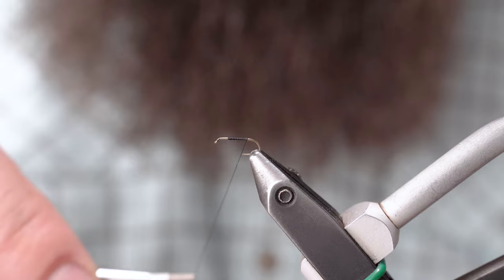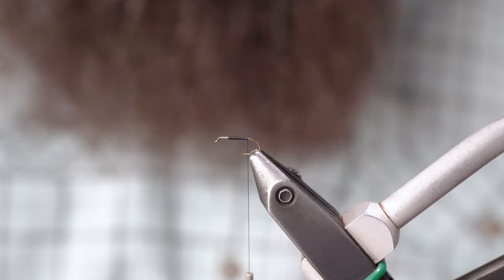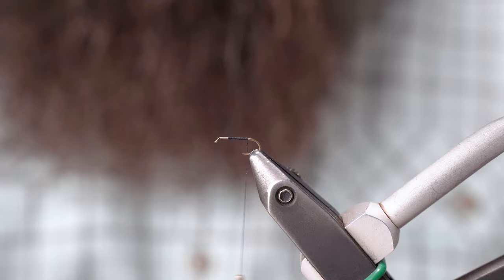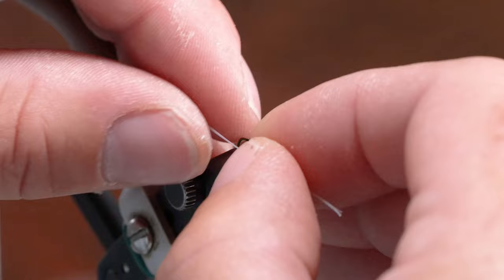So next I'm going to use, these are mayfly tails. They look like bristles from a brush. So I'm taking three of each on either side. I'm going to tie in using the pinch wrap.